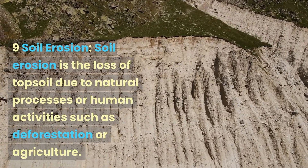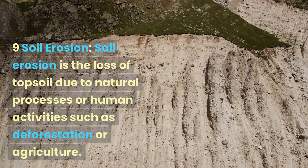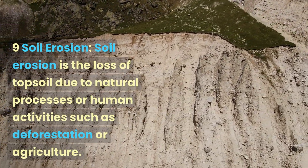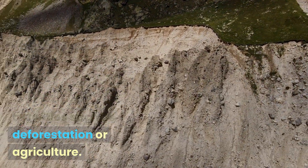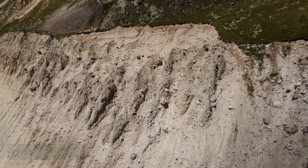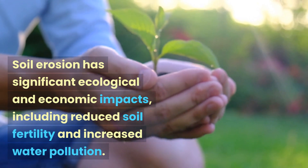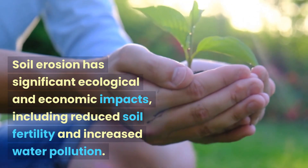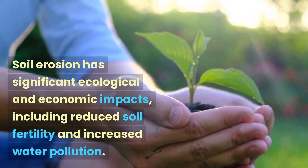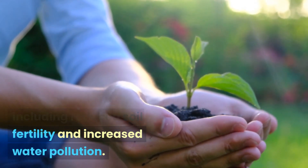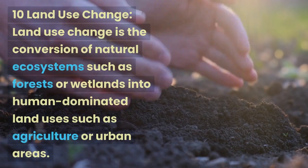9. Soil erosion is the loss of topsoil due to natural processes or human activities such as deforestation or agriculture. Soil erosion has significant ecological and economic impacts, including reduced soil fertility and increased water pollution.